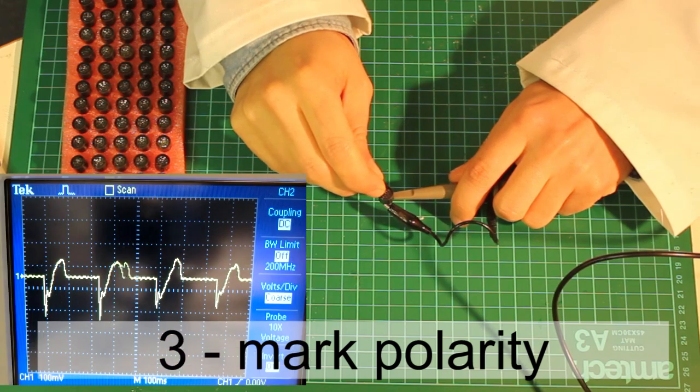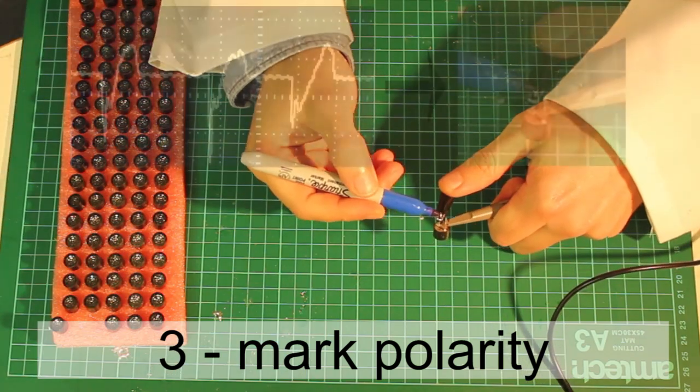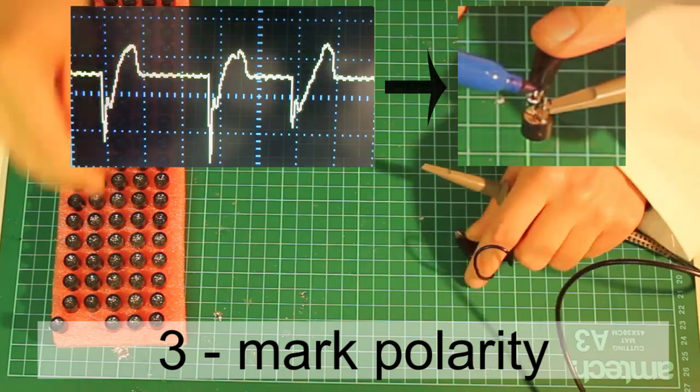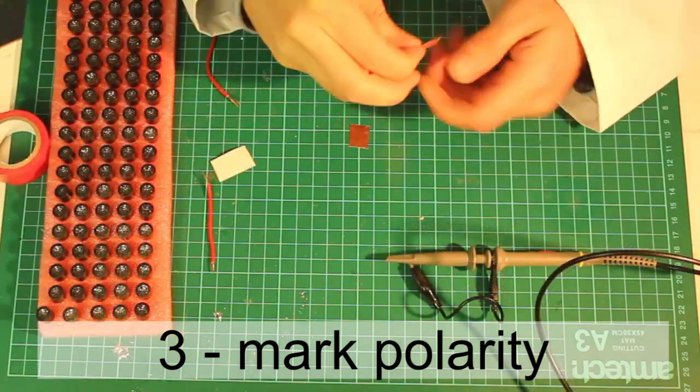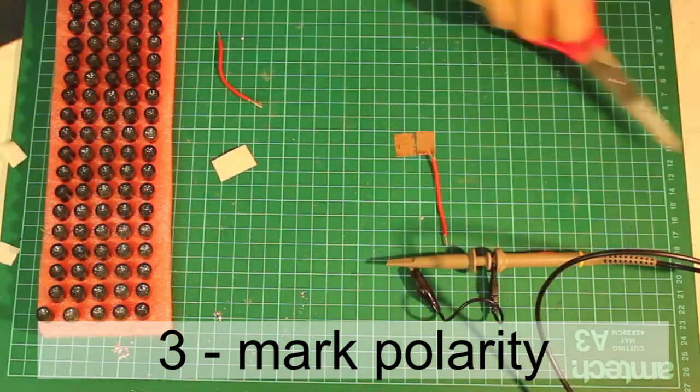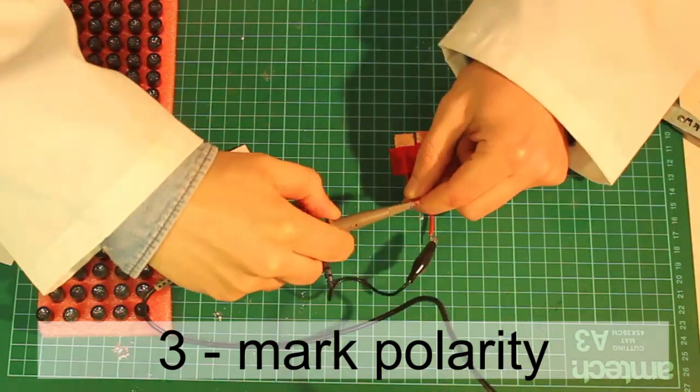If the spike goes down, mark the negative leg. For doing it faster, stick two copper strips to the table and attach the probes to them.